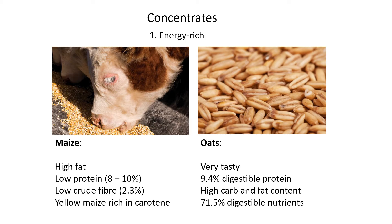If asked about a health benefit of maize or energy-rich concentrates, maize specifically has carotene, which helps with the formation of healthy skin. The second energy-rich concentrate example is oats. The main benefit is that animals love oats because it's very tasty, making it good to mix with any ration to ensure animals eat all their feed.